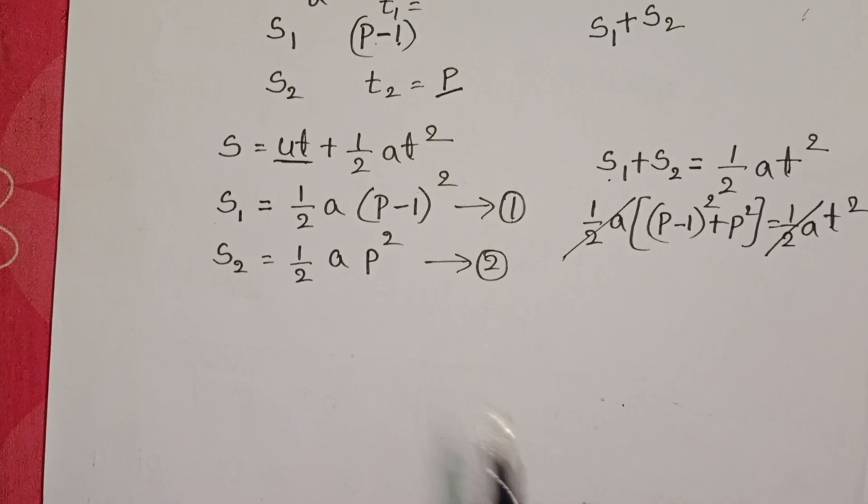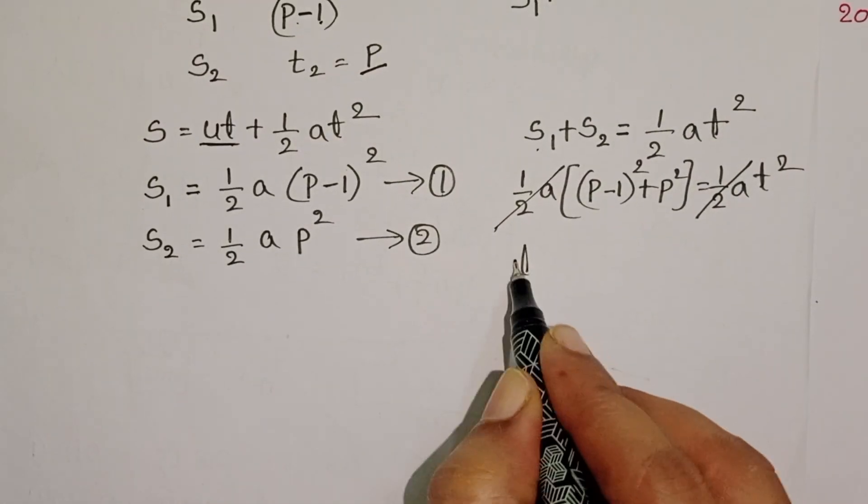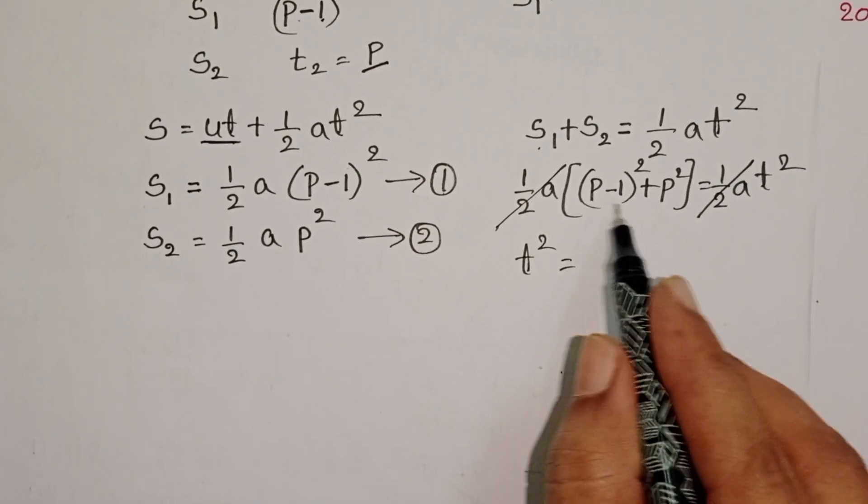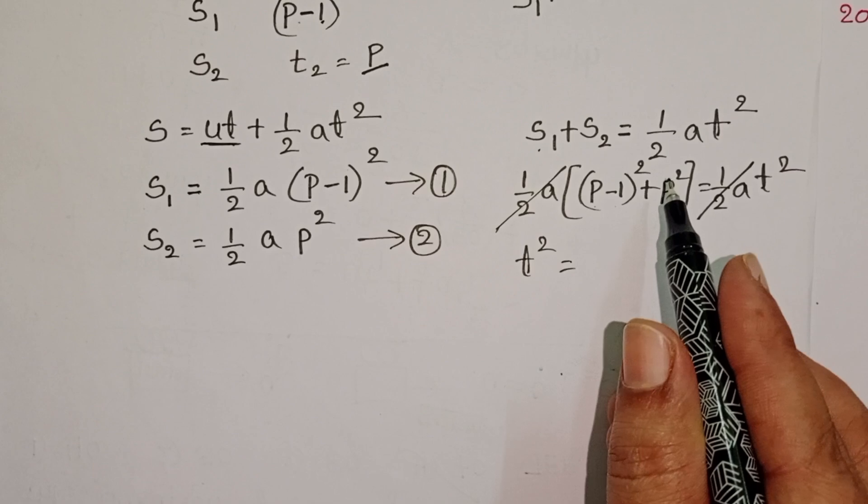On both sides, half A gets cancelled. T square equals, expand this, P-1 whole square.